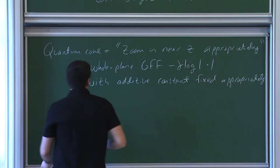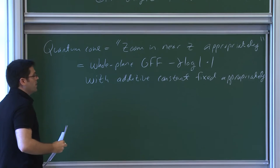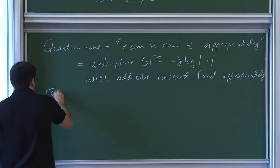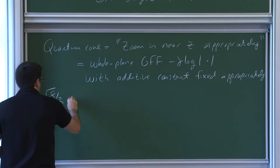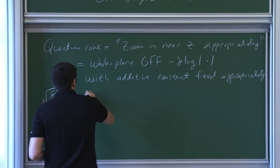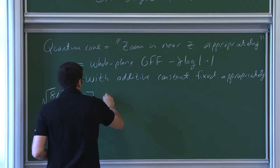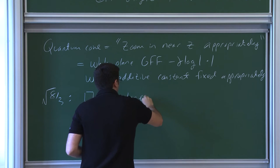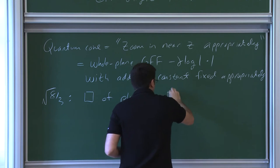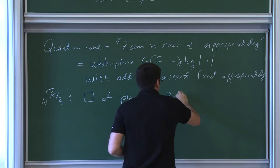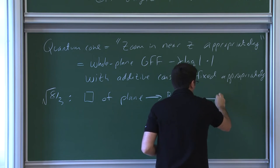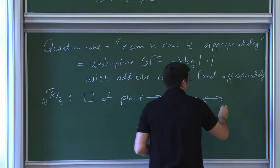Once we have that, we derived a particular object called a quantum cone. A quantum cone is what you get when you zoom in near z in the appropriate way. More precisely, a quantum cone is the same as a whole-plane Gaussian free field minus gamma times the log function, where you fix the additive constant in the whole-plane GFF in the right way. In terms of random planar maps, when gamma equals the square root of 8/3, if you take a quadrangulation of the plane, this converges in the limit to the Brownian plane, and the Brownian plane is what corresponds to the quantum cone.